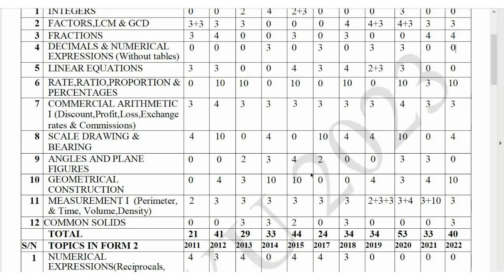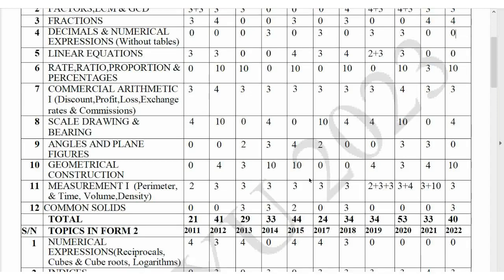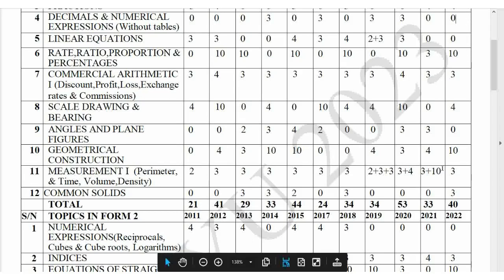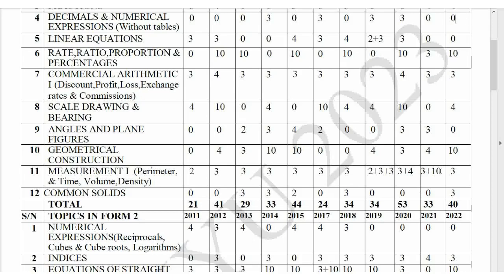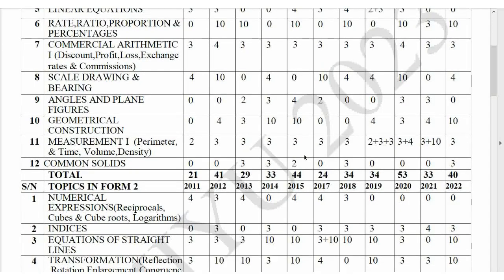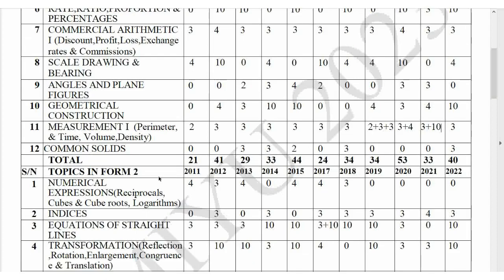Angles and plane figures — last year it was not there, 2021 it was 3 marks, 2020 was 3 marks, 2019 it was not there. There are questions with very many marks that don't miss — look at measurement: perimeter, time, and volume. It is always there, it never misses. In 2020 and 2021 there was a 10-mark question in Section B and a 3-mark question in Section A — so 13 marks total for measurement. These are questions you cannot afford to miss.